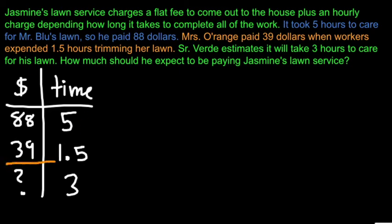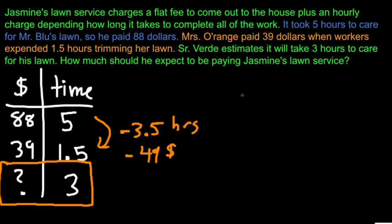Money and time. So we're going to ignore this bottom row for right now because we don't have complete information about it. So let's look at this. If I'm taking 3.5 less hours, that corresponds to $49 less. That means that for each hour, the charge is $14.